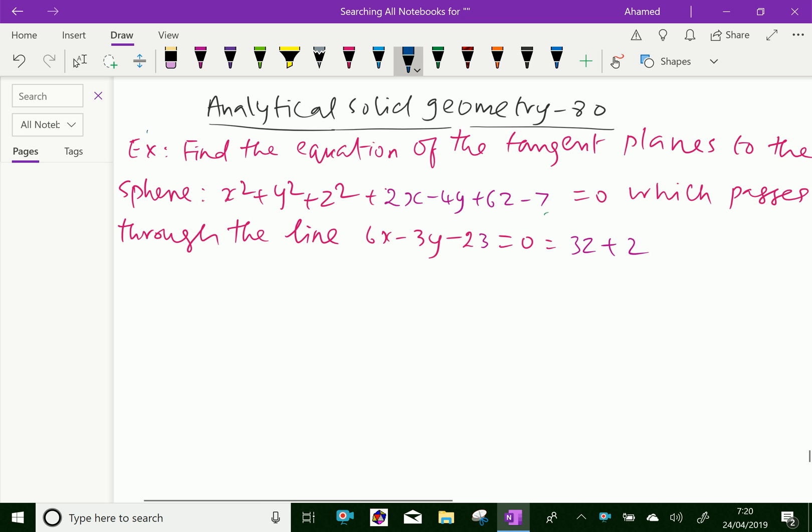Look at this example. Find the equation of the tangent planes to the sphere x² + y² + z² + 2x - 4y + 6z - 7 = 0, which passes through the line 6x - 3y - 23 = 0 = 3z + 2.